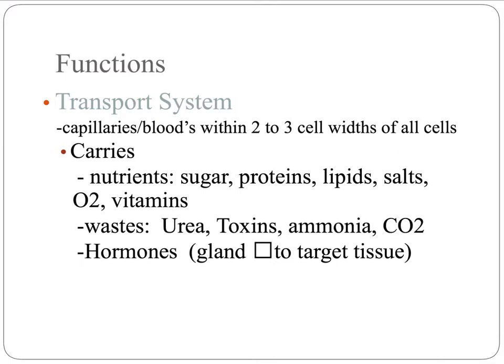One of the main functions of blood is as a transport system. You have trillions of cells, and all of those cells have needs. They want stuff to stay alive, like oxygen and sugar and salts. And through their own chemistry, they create lots of waste like urea, ammonia, and carbon dioxide, which they want to get rid of. Your body also utilizes blood as a transport system for hormones, our chemical messengers. Hormones are made in a gland, but their target organ might not be right nearby, so we utilize the blood to carry that hormone to the target tissue.